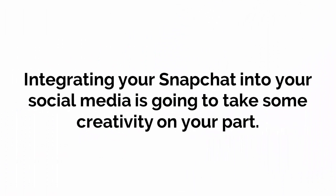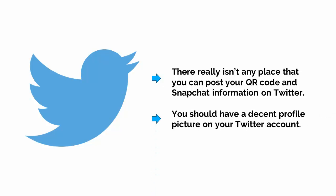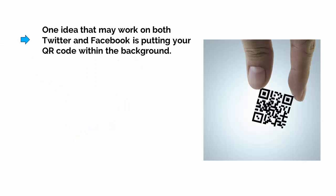Integrating your Snapchat into your social media is going to take some creativity on your part. There really isn't any place that you can post your QR code and Snapchat information on Twitter. The only thing that you could do is replace your profile picture with your QR code, but this is probably a bad idea — Twitter might not be happy that you're using a competing social media site's QR code on their site, and Snapchat might not be happy about it either. One idea that may work on both Twitter and Facebook is putting your QR code within the background.